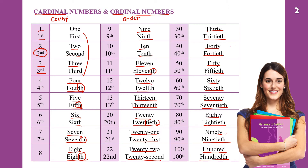So these are the cardinal and ordinal numbers up to 100th. Before we go to the next page, one thing we need to remember is the article 'the.' In front of ordinal numbers we need to put 'the,' so it's going to be the first, the second, the third, and the hundredth.